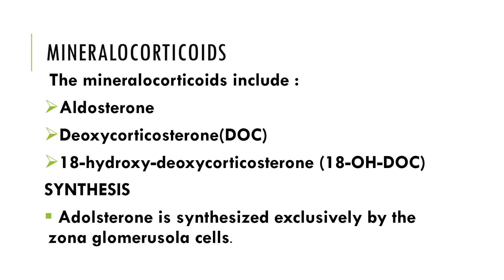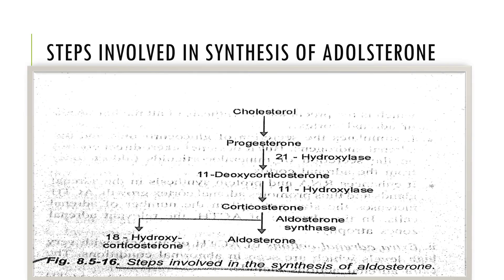Aldosterone is synthesized exclusively by the zona glomerulosa cells. The adrenal cortex has three layers: zona glomerulosa, zona fasciculata, and zona reticularis. The steps involved in the synthesis of aldosterone begin with cholesterol, which is the basic substrate that converts into the different hormones.